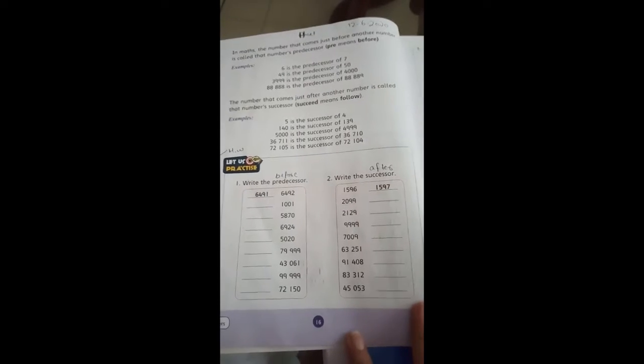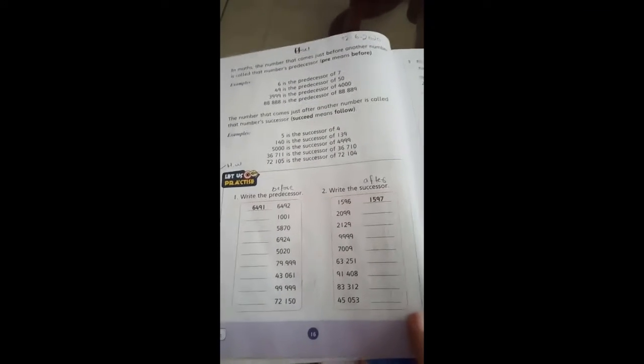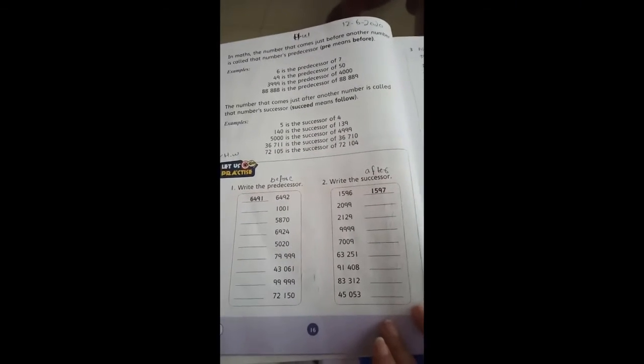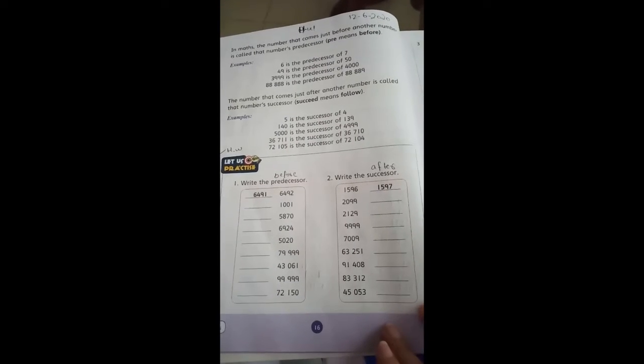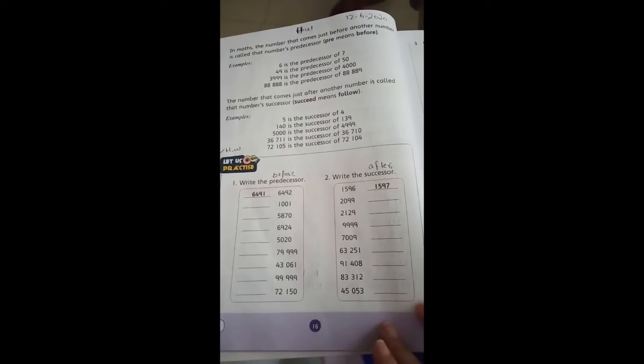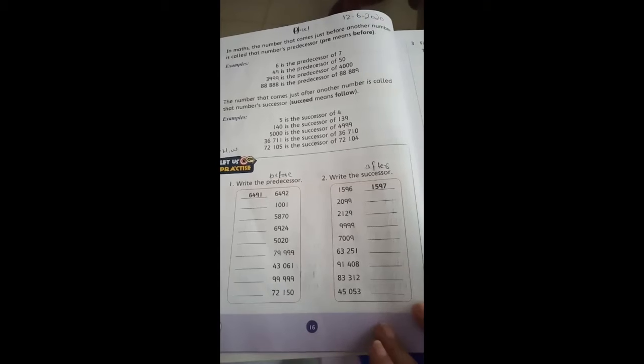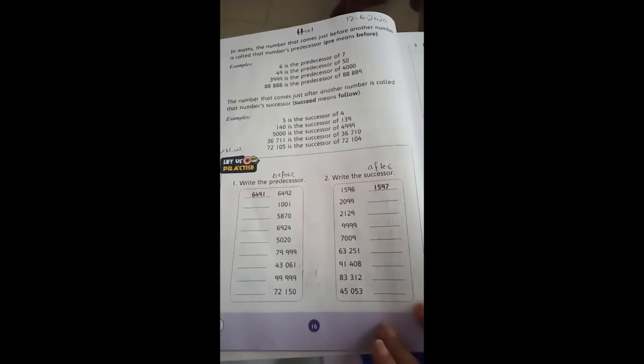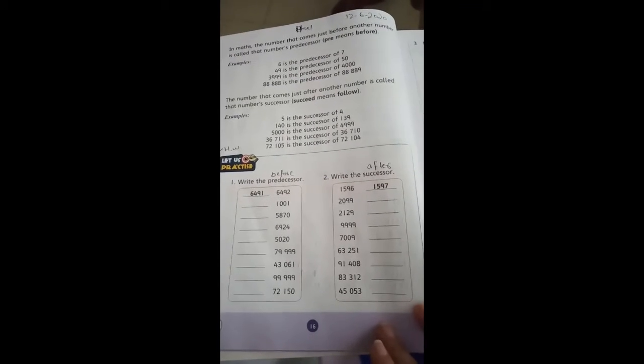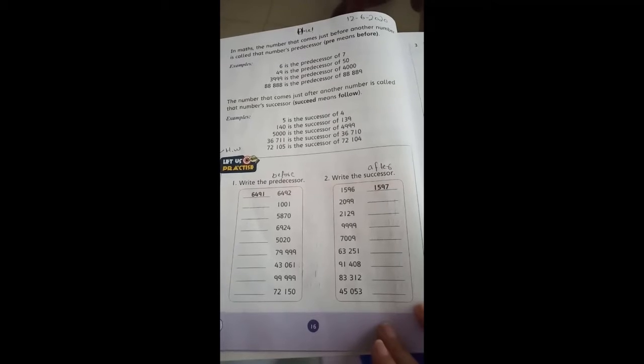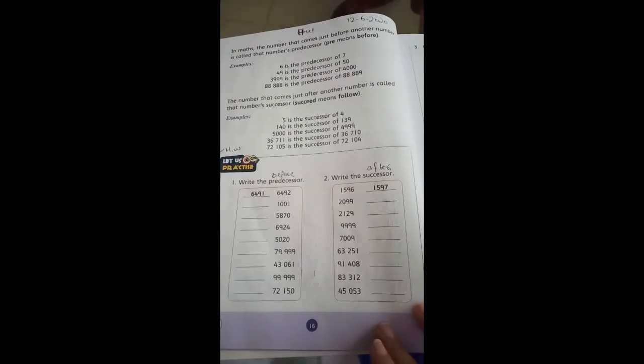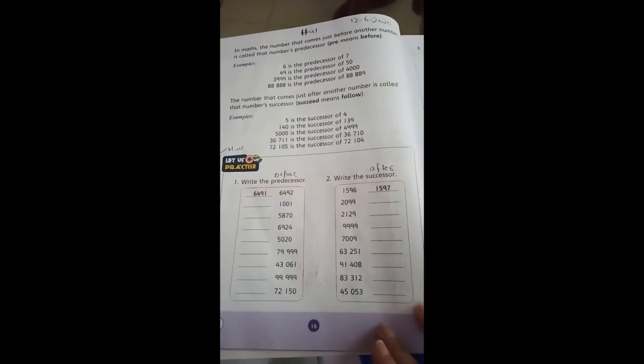In maths, the number that comes just before another number is called the number's predecessor. We mean before. Example: 6 is the predecessor of 7, 49 is the predecessor of 50, 3999 is the predecessor of 4000, 8888 is the predecessor of 8889.